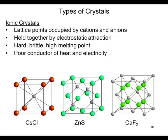Ionic crystals have lattice points occupied by cations or anions. They are held together by electrostatic attraction. They are hard, brittle, and have high melting points.